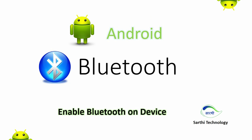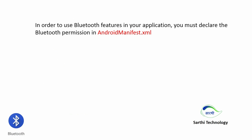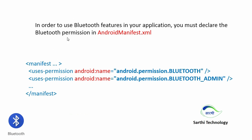Namaste friends, welcome to Sarathi Technology. This is the initial video of the Android Bluetooth tutorial. In this video we will learn how to enable Bluetooth on a device. In order to use the Bluetooth feature in your application, you must declare the Bluetooth permission in the Android manifest. There are two permissions: android.permission.BLUETOOTH and android.permission.BLUETOOTH_ADMIN. These two permissions are required and we will add them in the manifest file.